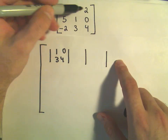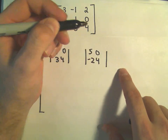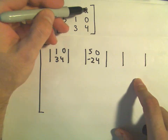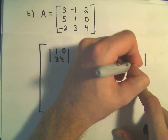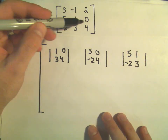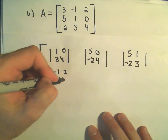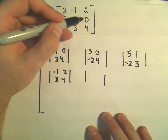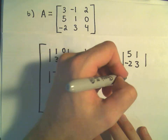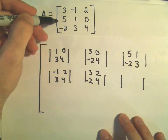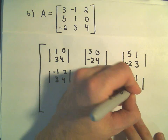If we cover up the first row and second column, we have 5, 0, negative 2, 4. If we cover up the first row and third column, we have 5, 1, negative 2, 3. If we cover up the second row and first column, we have negative 1, 2, 3, 4. If we cover up the second row and second column, we have 3, 2, negative 2, 4. If we cover up the second row and third column, we have 3, negative 1, negative 2, 3.